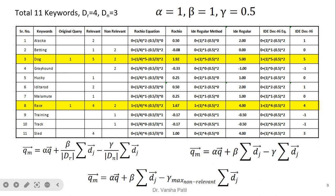For the IDF Regular method, normalization by document count is not used, so the division parameter is removed; otherwise the equations are the same. For the IDF Decay (Deck High) method, the gamma term is multiplied by the maximum non-relevant term frequency. Here the maximum non-relevant score is 2, so every equation is multiplied by 2 for the non-relevant portion, giving the IDF Decay result.